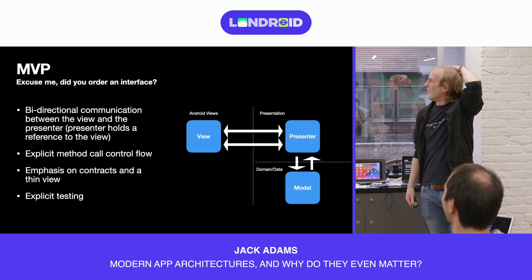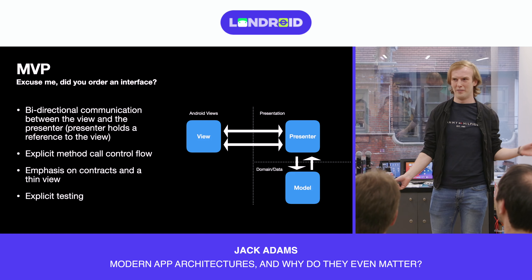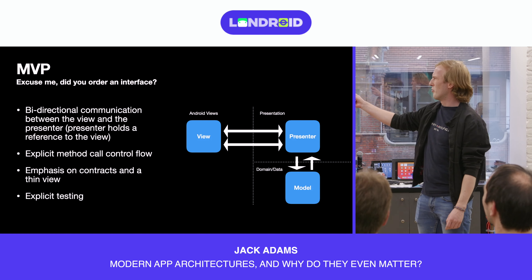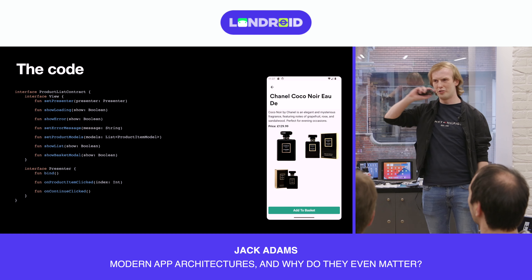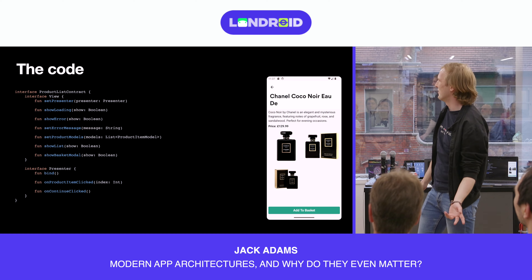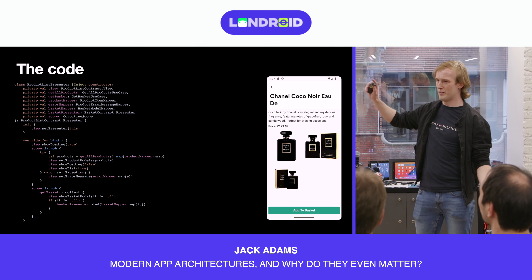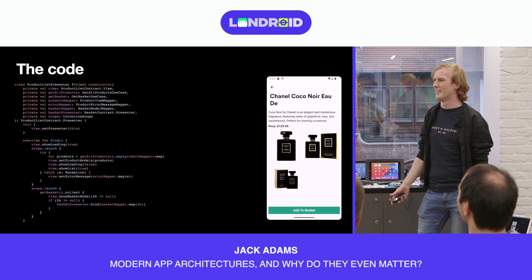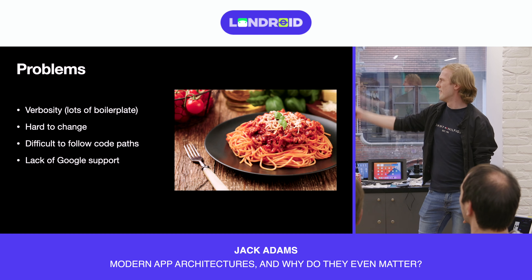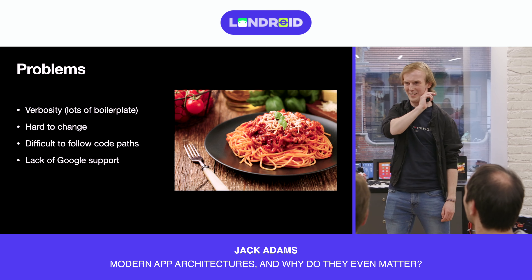What is MVP? In MVP, the presenter has a reference to the view and everything comes through a method — you call a method, you do something. There's a real emphasis on contracts and having a really dumb view, and the tests are very explicit. You're probably going to have a contract like this: show loading, show error, show error message, set product models, show list. Your unit test would essentially be 'verify view dot this, verify view dot this' — your test defines your behavior. The problem is it ends up with nested presenters, method calls all over the place, and anyone trying to figure out what's happening is going to have a very bad day.